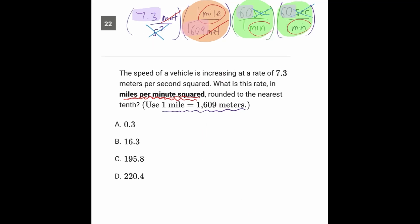So 7.3 times 60 times 60, that's 26,280. And we're dividing that by 1,609. On the calculator, that comes out to 16.3 repeated, which is answer choice B in this situation.